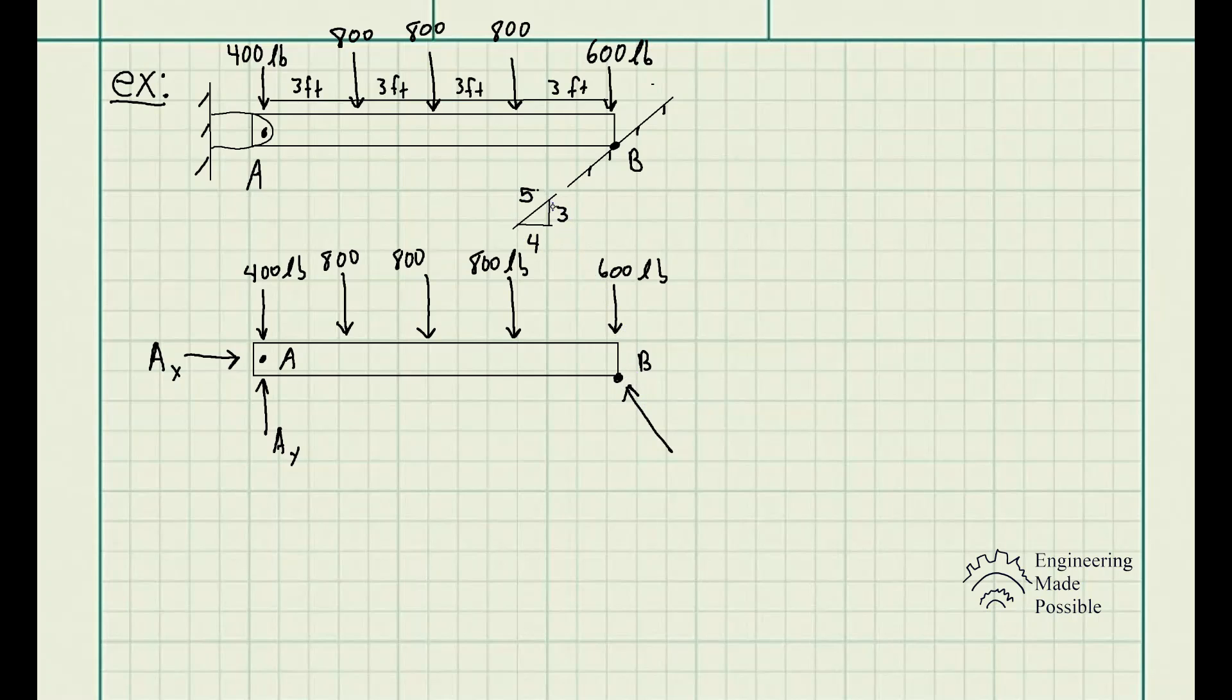We see we have the triangle here with the slope, the rise, and the run. You could calculate that angle, but you could still draw this here with the slope, the rise, and the run.